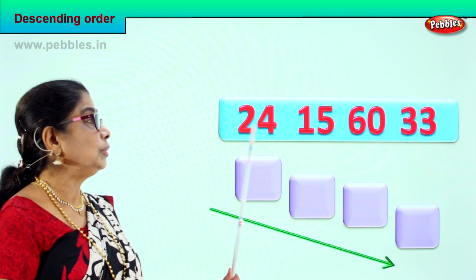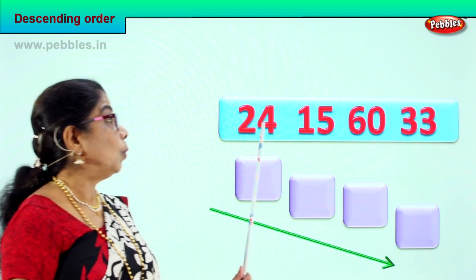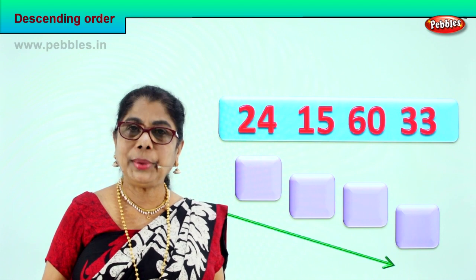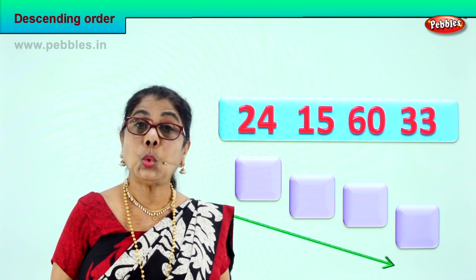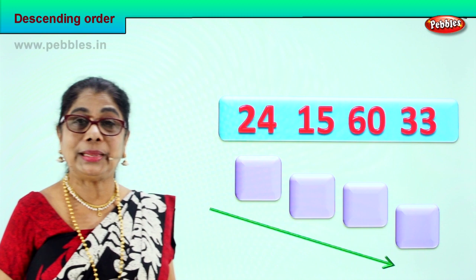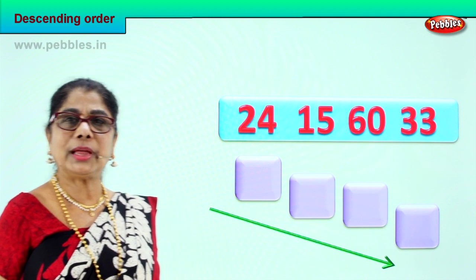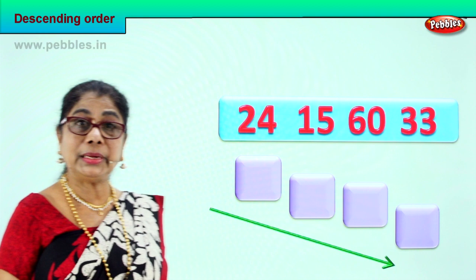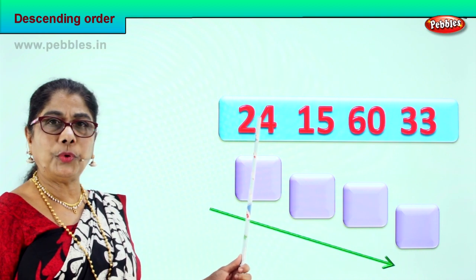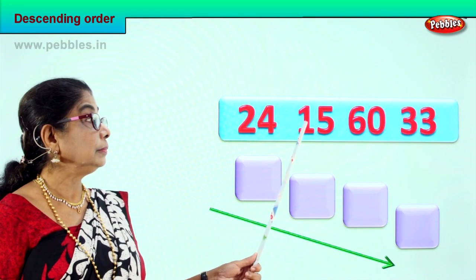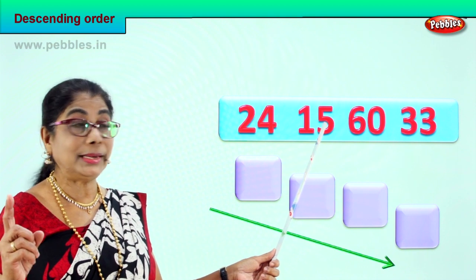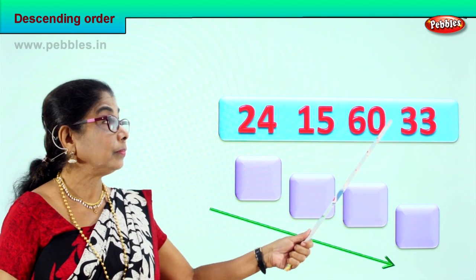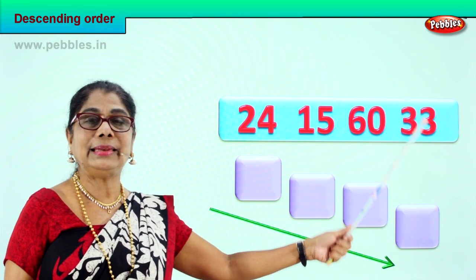Now I have four sets of numbers for you: one, two, three, four. To pick the biggest number, we need to look at the tens place. Let's look at all the tens places in these four numbers. Twenty-four: two tens. Fifteen: one ten. Sixty: six tens. Thirty-three: three tens.